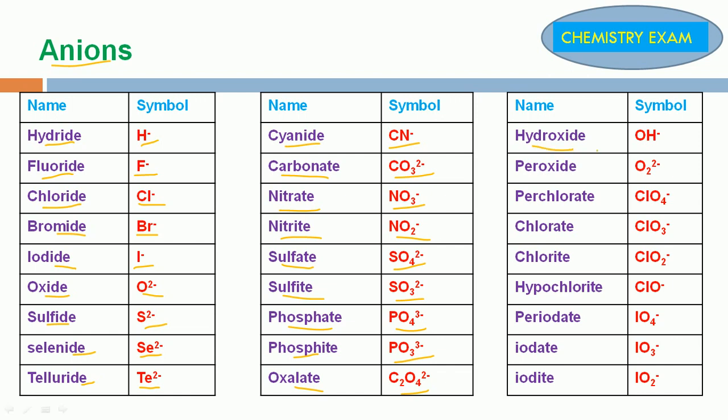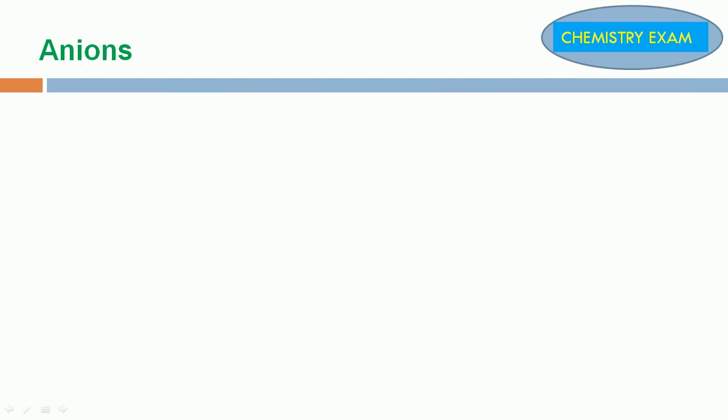Hydroxide OH-, Peroxide O2 2-, Perchlorate ClO4-, Chlorate ClO3-, Chlorite ClO2-, Hypochlorite ClO-. Periodate IO4-, Iodate IO3-, Iodite IO2-.